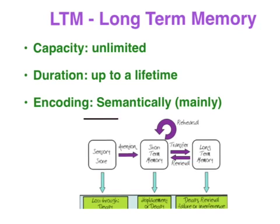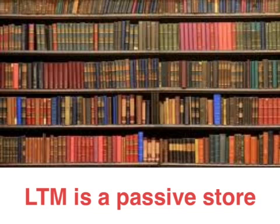It might decay through lack of revisitation, we might have a retrieval failure due to the absence of the right cue, or we might get some interference, particularly when we have stimulus similarity. The information in LTM is not part of our conscious awareness, so therefore it's a passive store, as opposed to STM which is an active store.